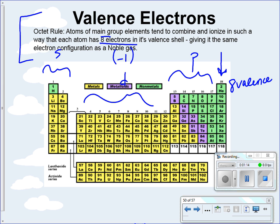Those are always going to be what goes towards your valence electrons. From our ion knowledge, the first column — the alkali metals — are always going to be plus 1. The second column, alkaline earth, they're going to be plus 2. Coming over to the first column in our p orbital, that's going to be plus 3. We have minus 1, minus 2, minus 3.